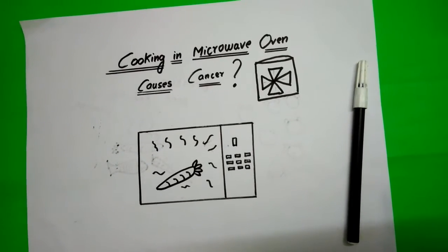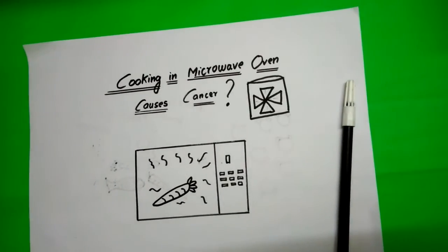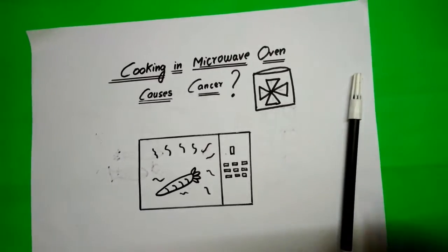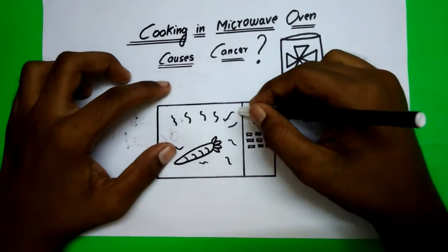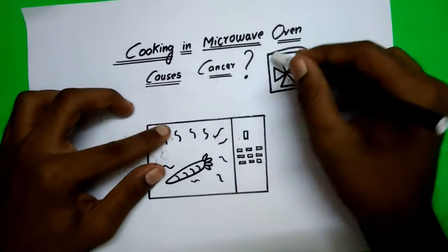What's up guys, welcome to We Talk Physics. Today we are going to see about one of the misconceptions in physics. There are some misconceptions about microwave ovens. Scientists also deal about it, and people think that cooking in microwave ovens causes cancer.